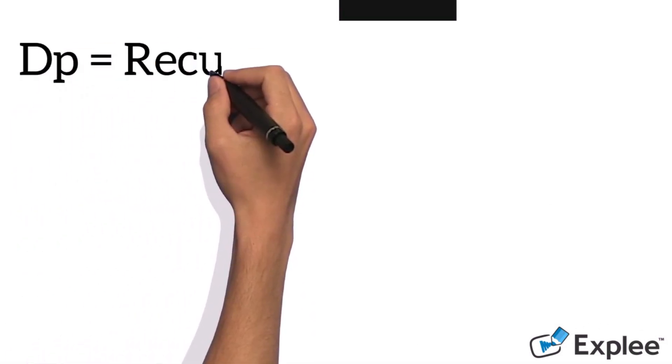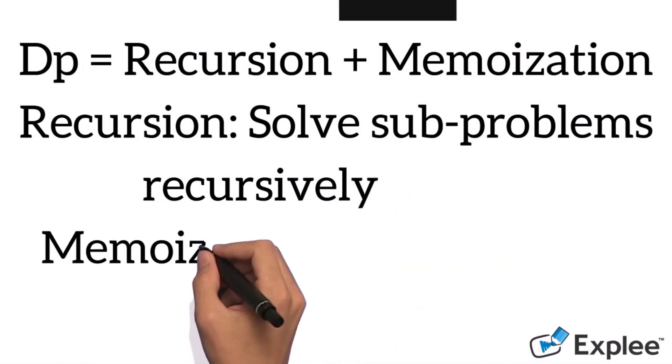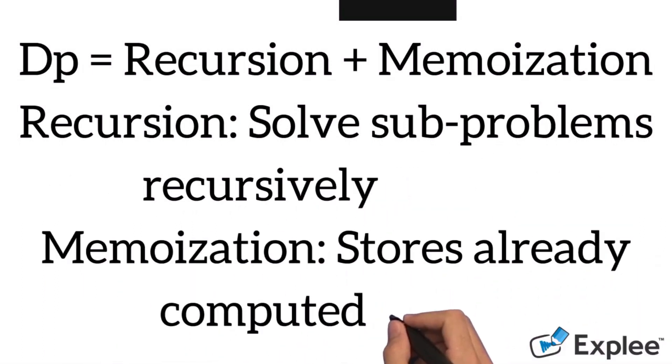Dynamic Programming equals Recursion plus Memoization. That means solve sub-problems recursively and store already computed values.